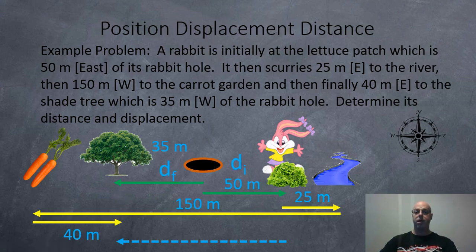Position, displacement, and distance. So here's an example problem. There's a rabbit initially at the lettuce patch which is 15 meters to the east of its rabbit hole, its reference point. And what the rabbit is going to do, it's going to scurry 25 meters east to the river for a little drink and then it's going to scurry 150 meters to the west to the carrot farm to have some carrots. And then finally it's going to go 40 meters to the east to relax under this shady tree. So all together, what is the distance in the displacement?